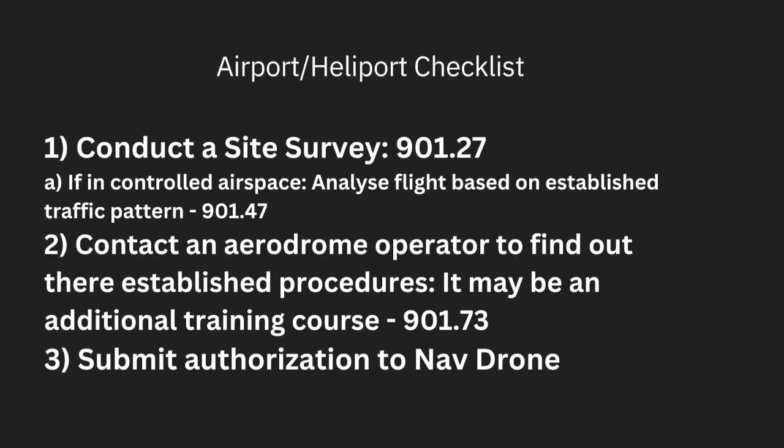Let's go through a few checklist items for our airport/heliport checklist. First, before you fly, conduct a site survey factoring in the established traffic pattern of that airport — CARS 901.27 is very important when flying near an airport, heliport, or aerodrome. Second, contact the aerodrome operator to find out their established procedures, which may include an additional training course. Lastly, once you've gathered all the information, submit this documentation to NavDrone for the local representative at the nearest flight service station to handle your request.